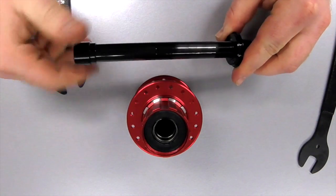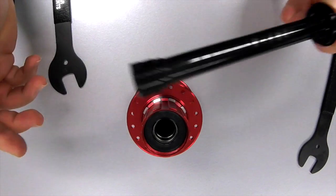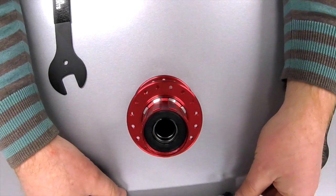If you want to change your axle into different versions you just swap this part for a QR, a 142, a 10mm, a 135x12, whatever you need.